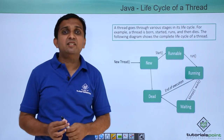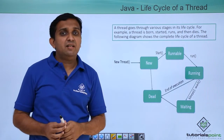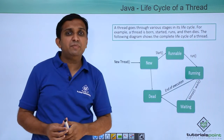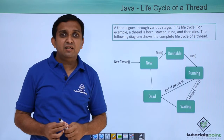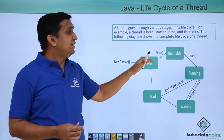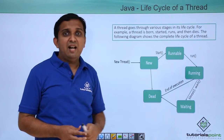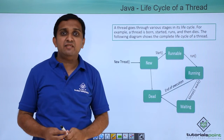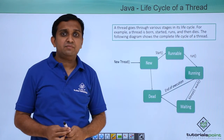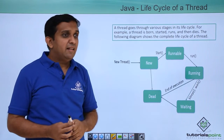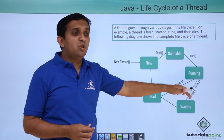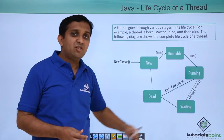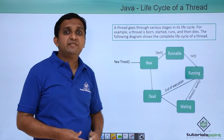Runnable means a thread which is about to run. Running the thread means executing the run method which is implemented inside the thread class. After the run method execution starts, the thread becomes a running thread. A running thread can then go into two stages: either it can go into the waiting state or into the dead state.